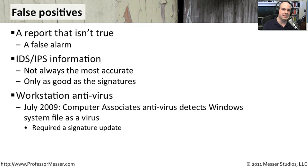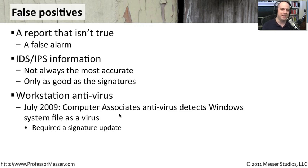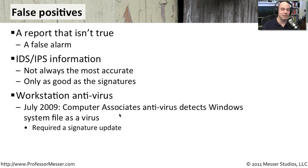You also see false positives in antivirus systems, when a message pops up on somebody's desktop saying they have a virus. A very good example: in July 2009, Computer Associates released a new set of antivirus signatures that identified a Windows system file as a virus. Everybody running Windows XP loaded the latest signatures — which is a best practice — but unfortunately those signatures thought that Windows itself was a virus. They released a required security update shortly after, saying it was a mistake, and providing an updated set of signatures that removed that false positive.